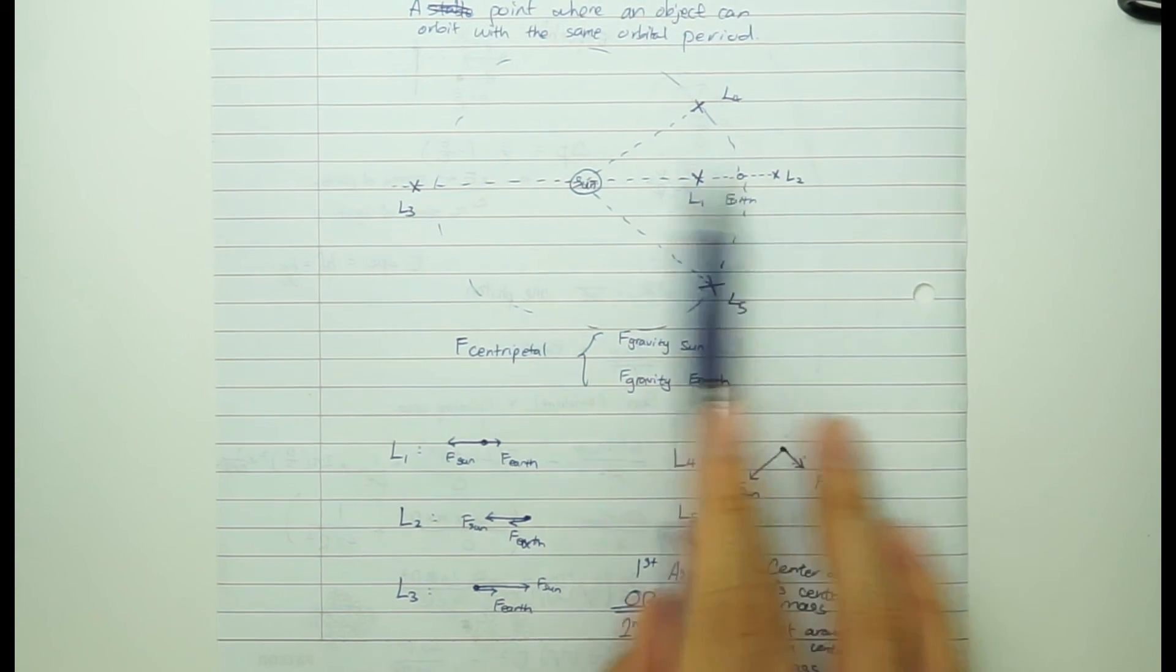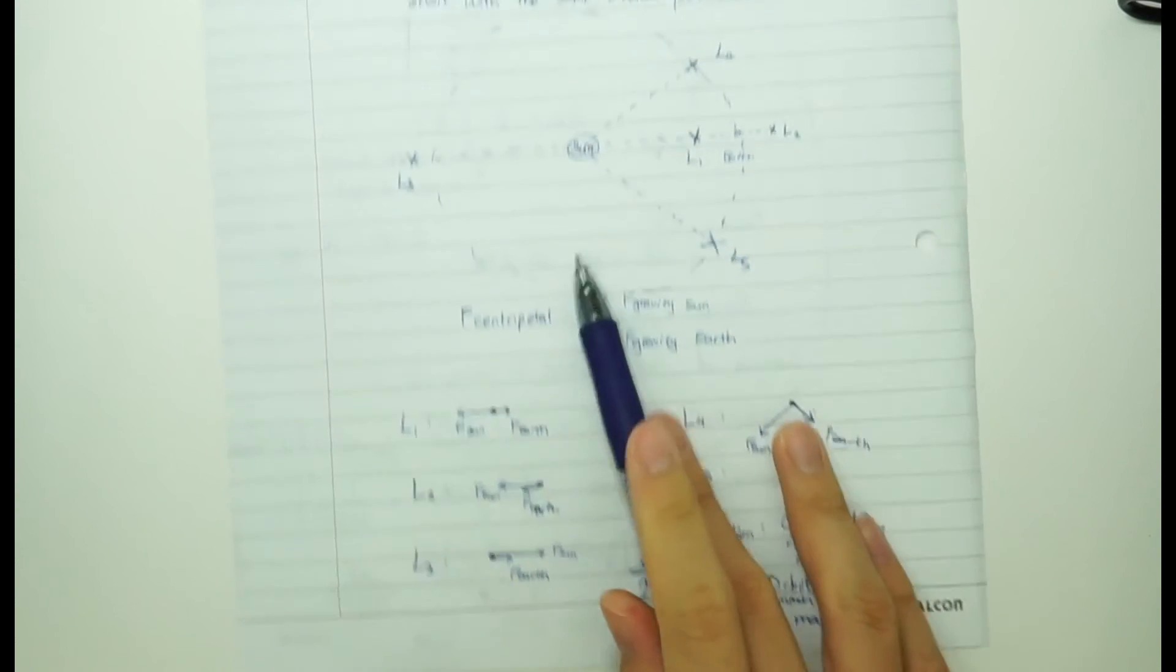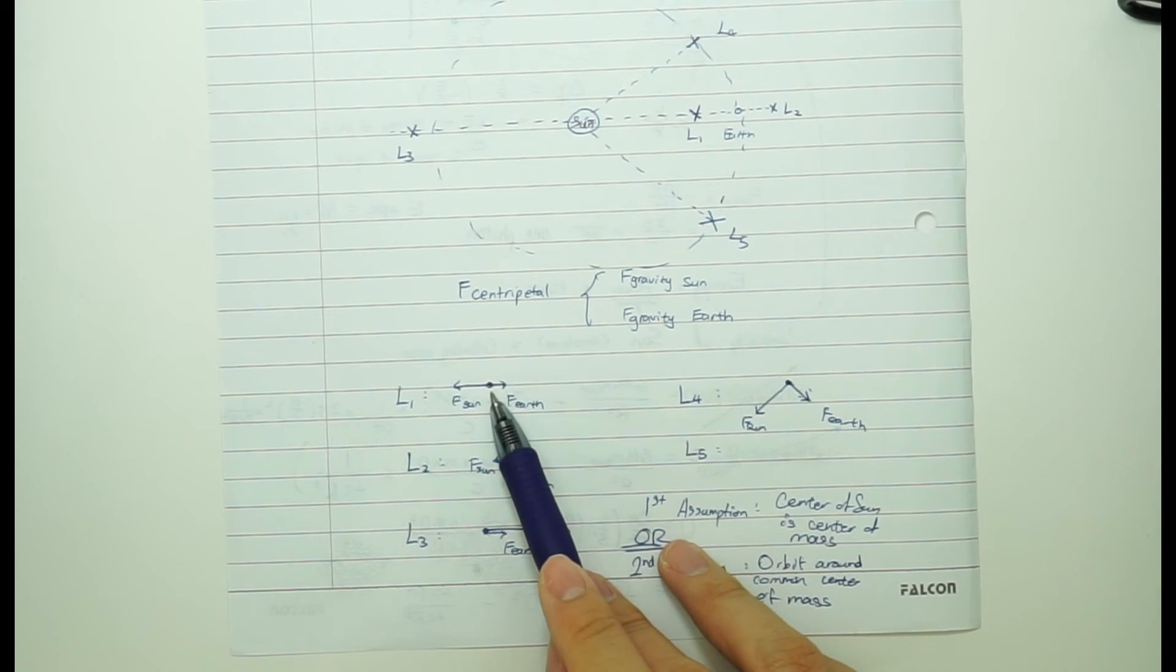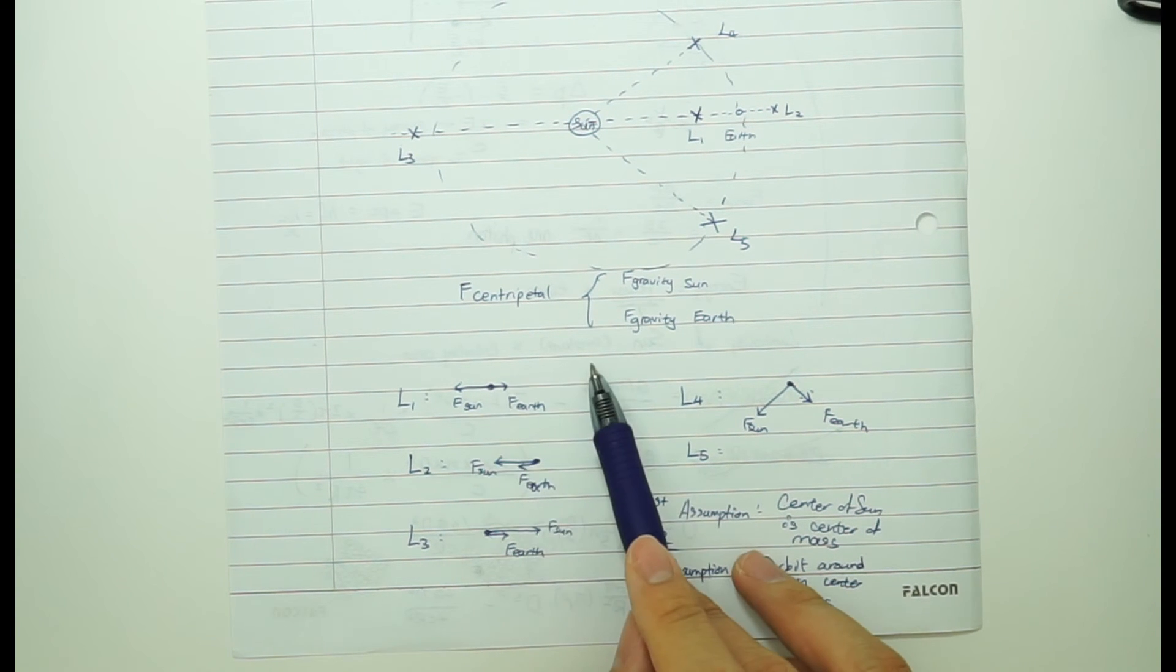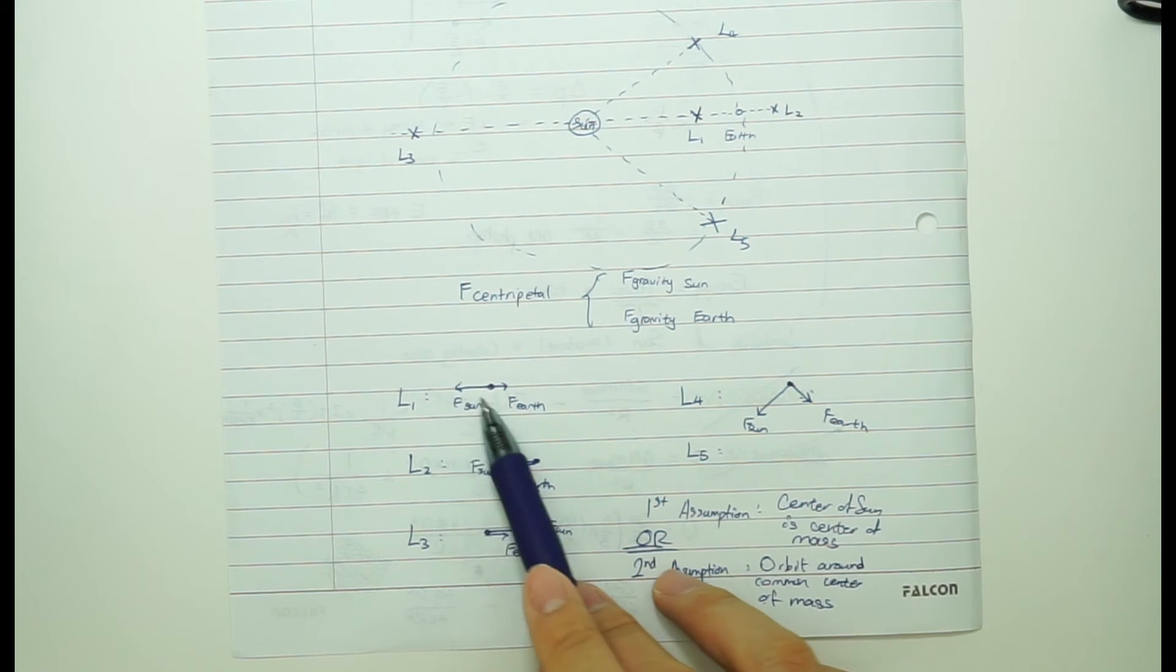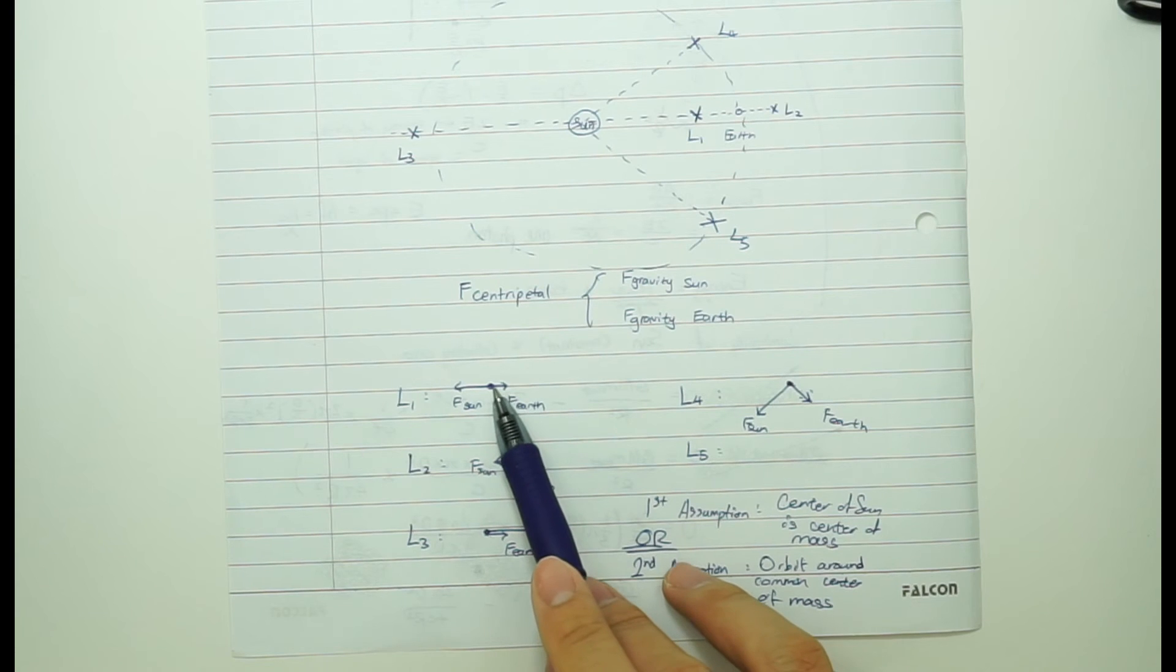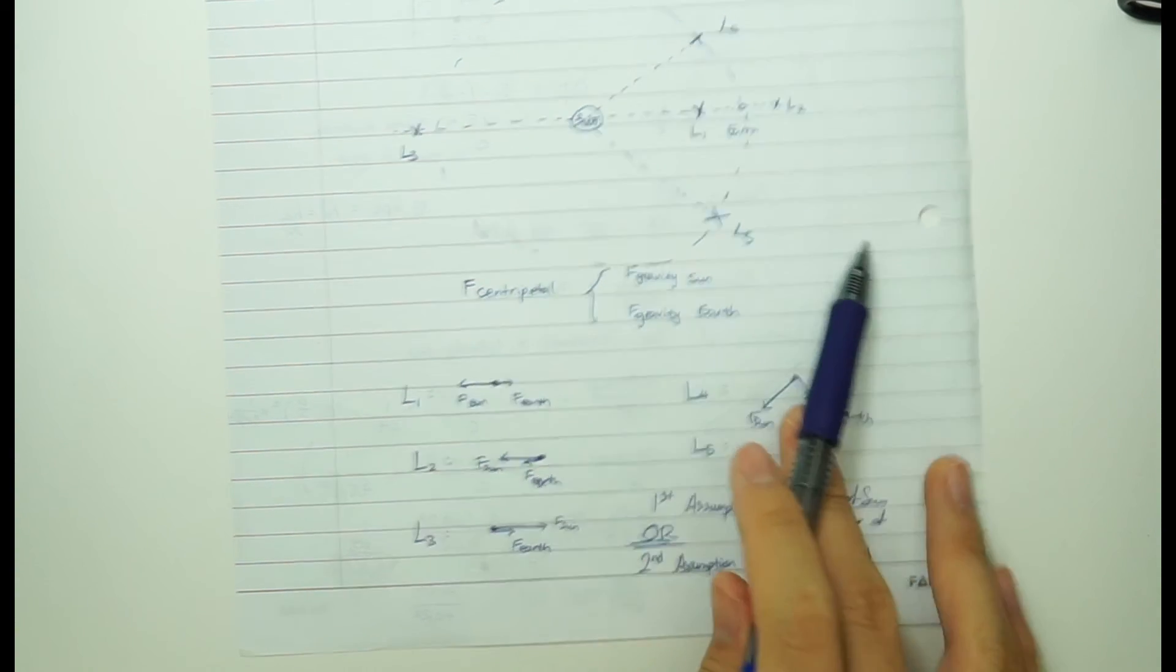So L1, L2, L3 are all unstable points. So why are they called unstable? Basically it's unstable because if they move closer to the other side, they'll accelerate to the other side. Like if they move a bit closer to the Sun, the Sun's pull gets stronger. The Earth's pull gets weaker and accelerate this way. And they won't be able to stay in that position.